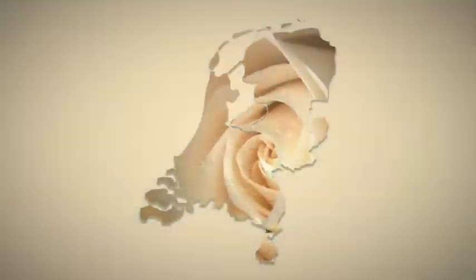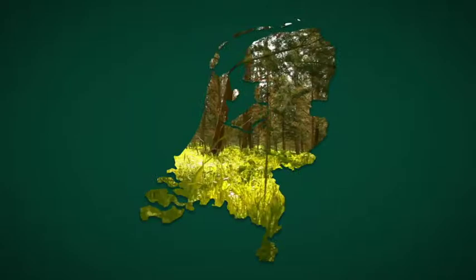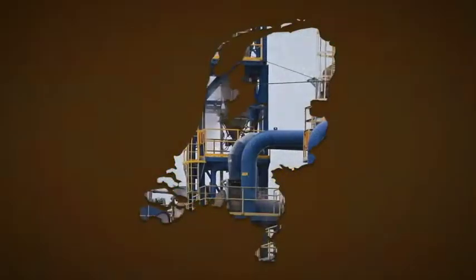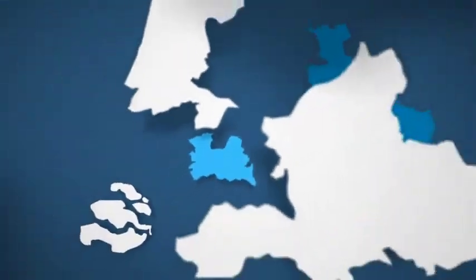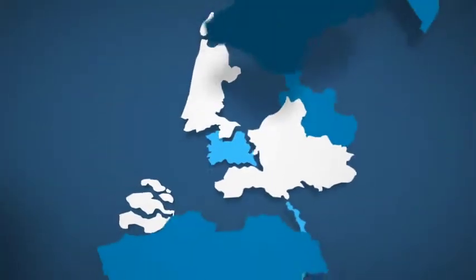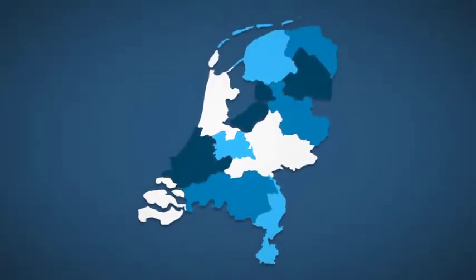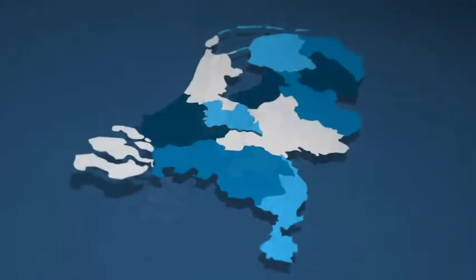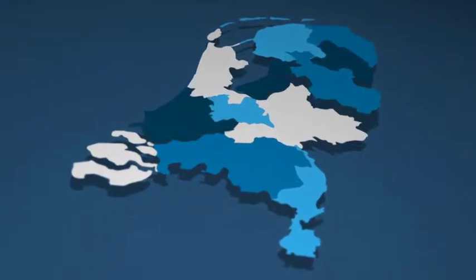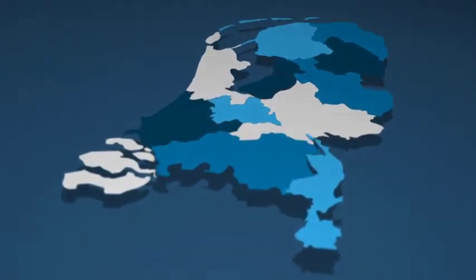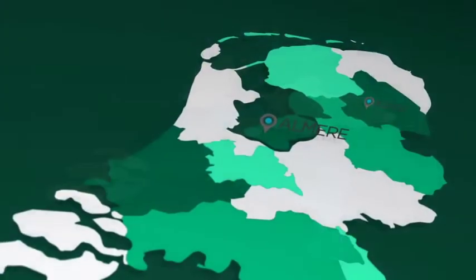Use your own content as a texture for the country map — images, footage, whatever you need. Highlight provinces with different colors to represent whatever you need the map to represent. Or get creative and add your own animations and images into the texture layers.